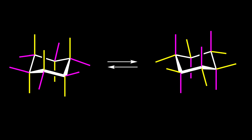First I'm going to explain how we can find the relative position of groups on the cyclohexane ring in chair conformers. I'm going to number these carbons one, two, three, and four, and we would like to know what is the relative position of axial and equatorial bonds in this structure.